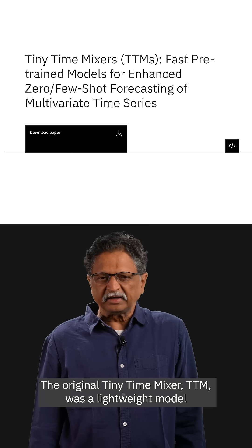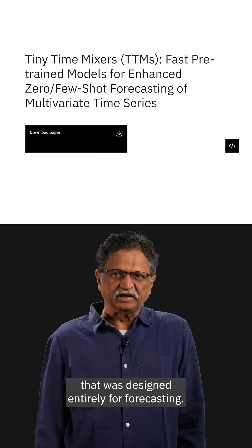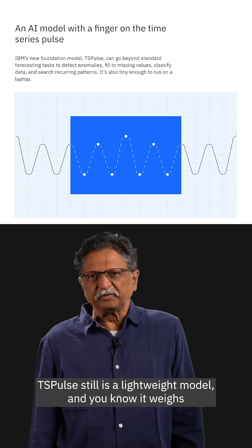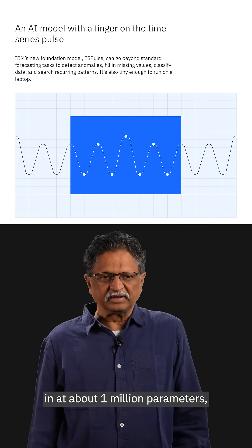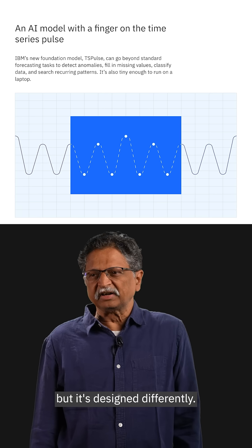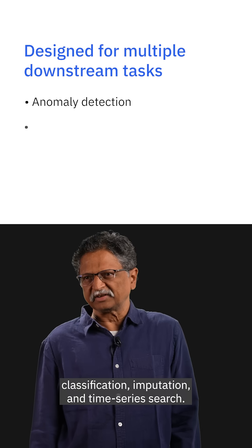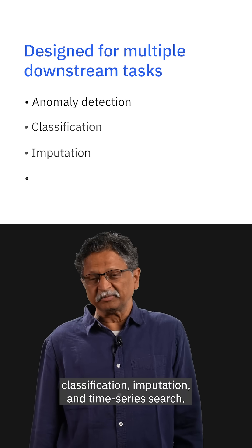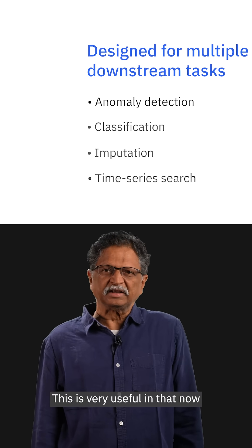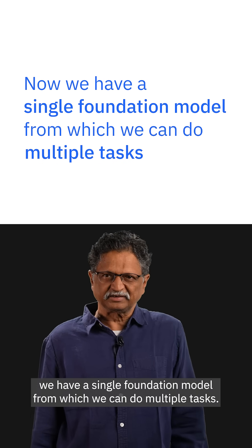The original Tiny Time Mixer, TTM, was a lightweight model designed entirely for forecasting. TSPULSE is still a lightweight model — it weighs in at about 1 million parameters — but it's designed differently. It's designed for multiple downstream tasks like anomaly detection, classification, imputation, and time series search. This is very useful in that now we have a single foundation model from which we can do multiple tasks.